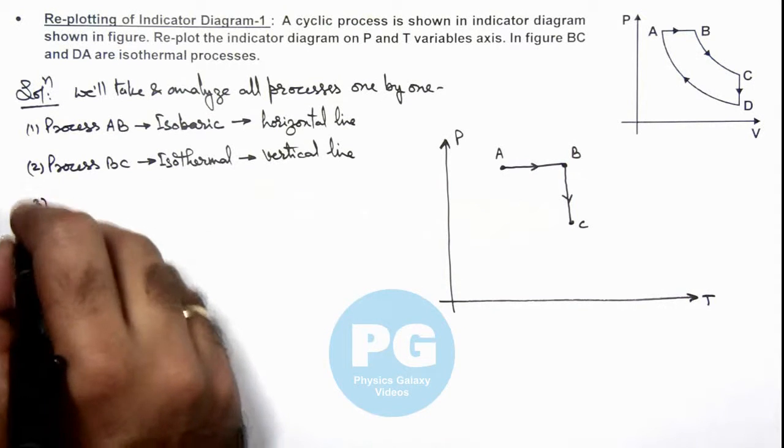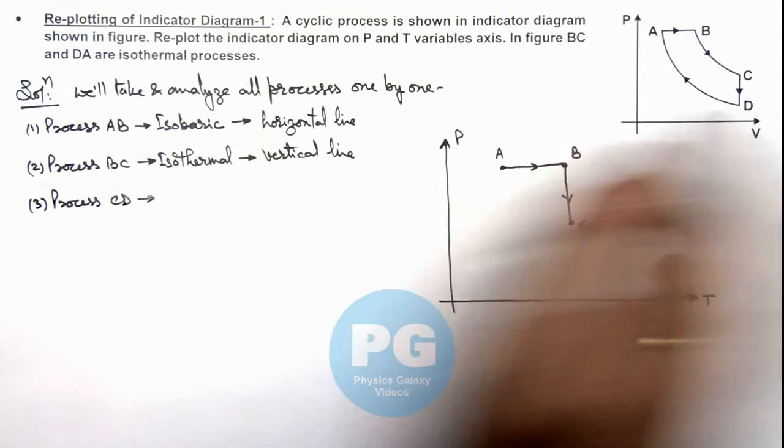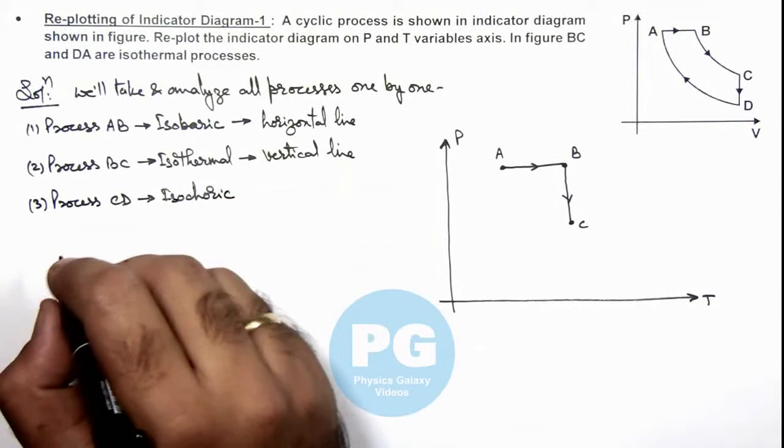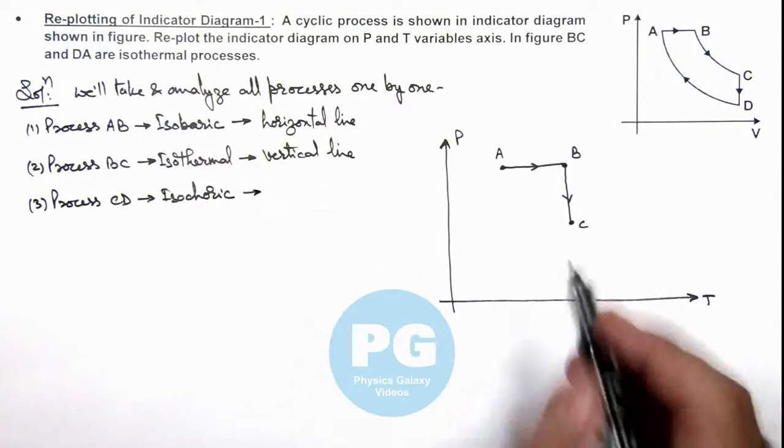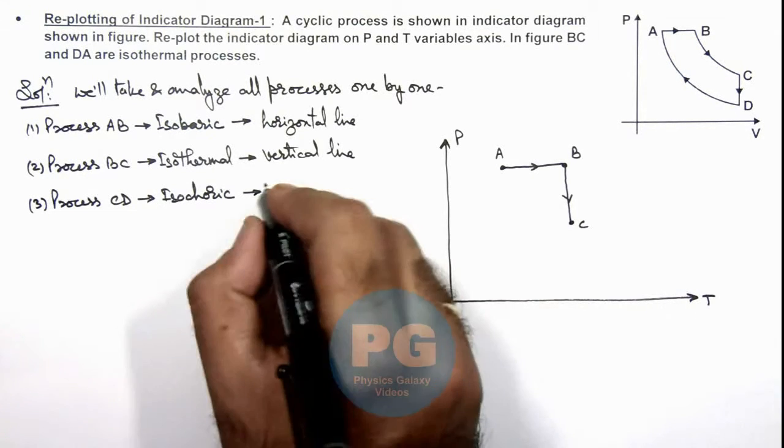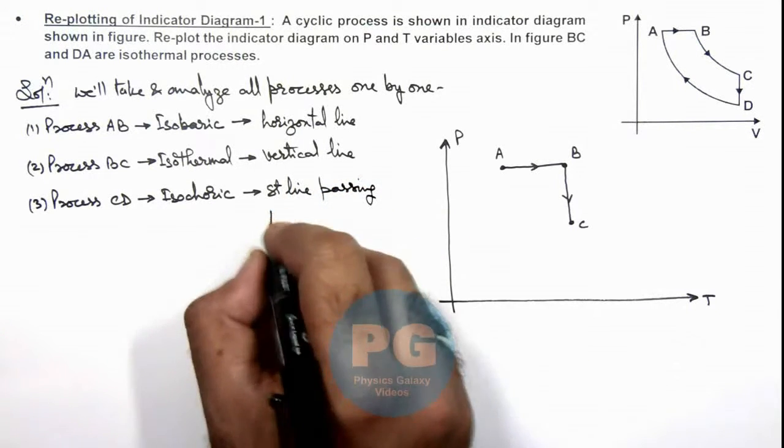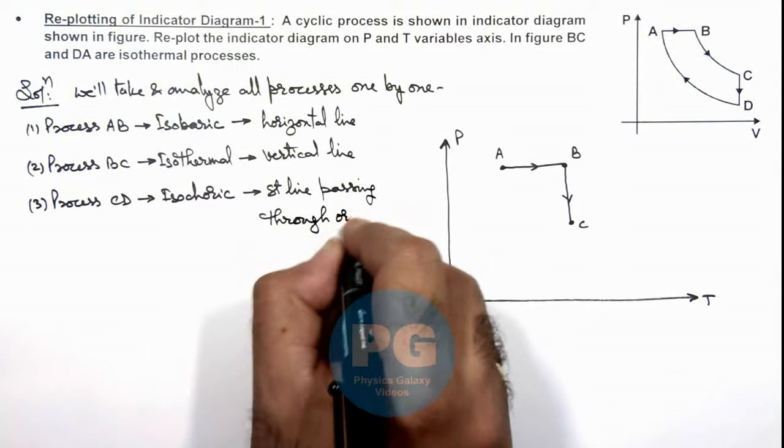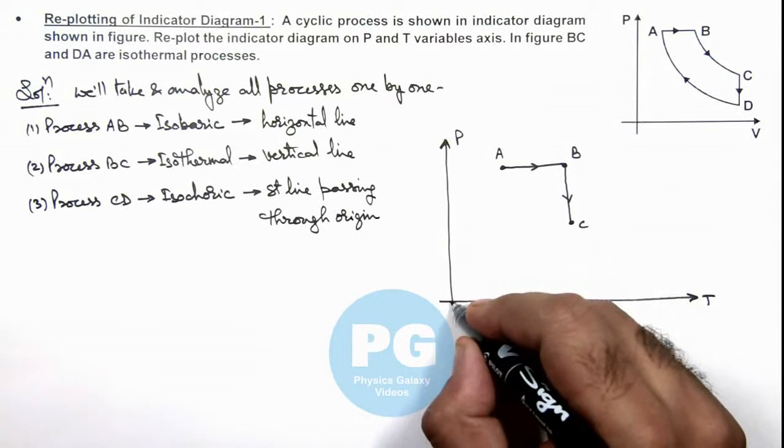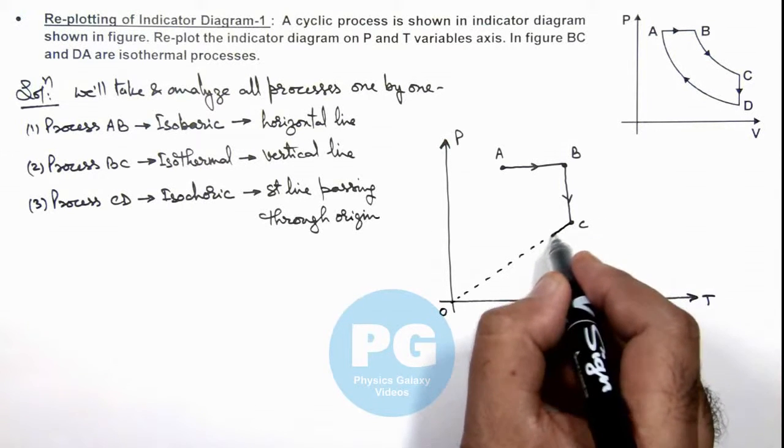If we talk about process CD, we can see this is an isochoric process where volume is constant. So if volume is constant, then by gas law for constant volume, pressure is proportional to T. So this is a straight line passing through the origin; only then will this be a pressure proportional to temperature relationship. So this line will start in such a way that it will be passing through the origin, and this process will be starting in this direction.